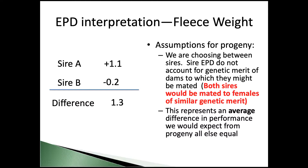EPDs for fleece weight assume the animal is at least nine months of age and older, so we would apply that to that age category when thinking about differences in fleece weight. This doesn't take into account the differences in the females that those sires could have been mated to — it's looking at this only from the perspective of the genes these sires will pass on to the next generation and the differences that will result. It represents an average difference in performance that we would expect from those progeny, all else equal.